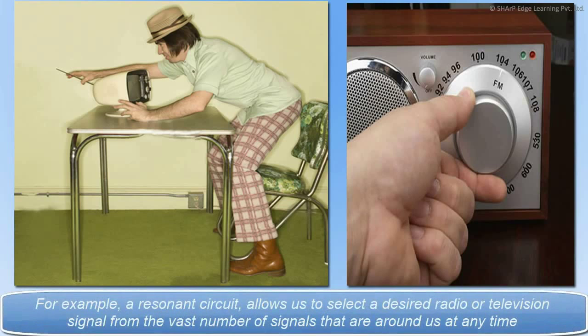For example, a resonance circuit allows us to select a desired radio or television signal from the vast number of signals that are around us at any time.